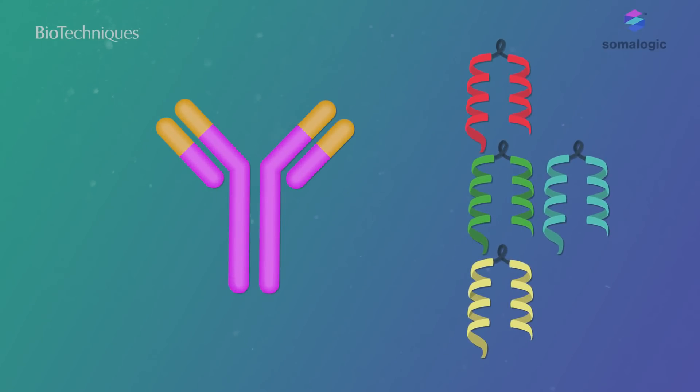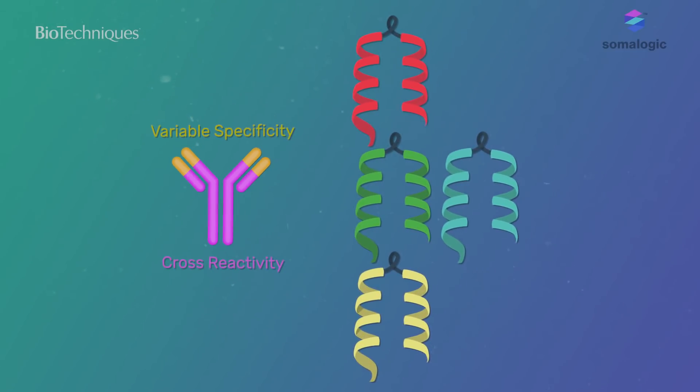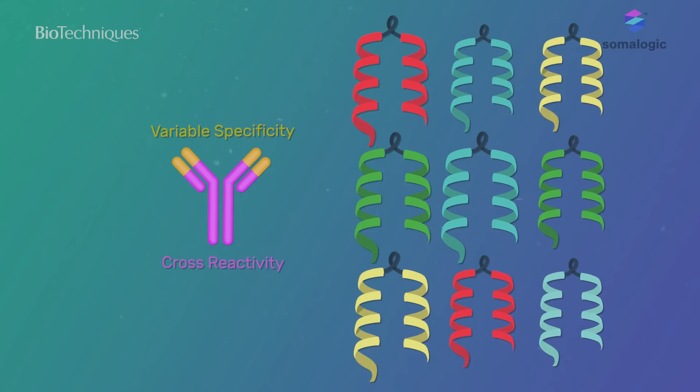Most protein assays rely on polyclonal antibodies, which have variable specificity and begin to exhibit cross-reactivity as plex is increased. These antibody-based assays only reveal a fraction of the complex story proteins have to tell.